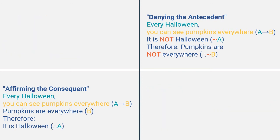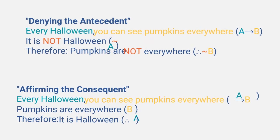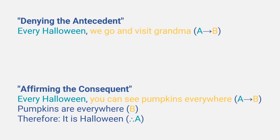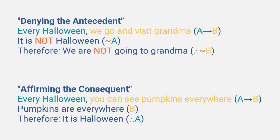Why they are false becomes clear when we change the content of A and B. Consider this major premise: 'Every Halloween we go and visit grandma.' The minor premise, denying the antecedent: 'It is not Halloween.' Therefore — we are not going to grandma. Wait, why not? Poor grandma only sees her grandchildren once a year? No. There is something wrong with the form of the argument — not with the truthfulness of the premises, but the way they are structured. They don't support the conclusion, and hence its form is invalid.